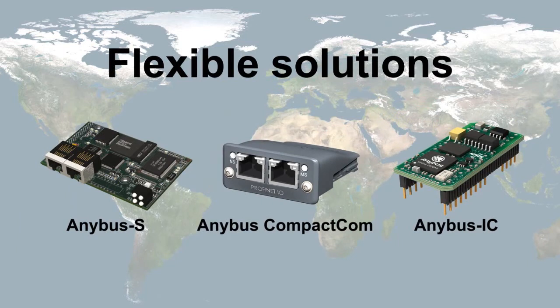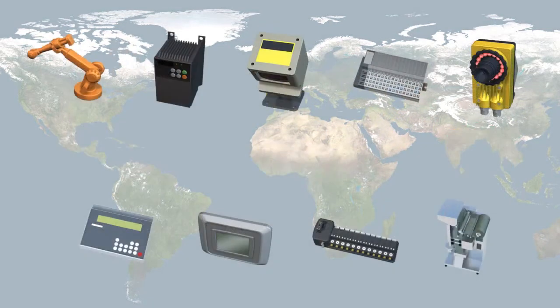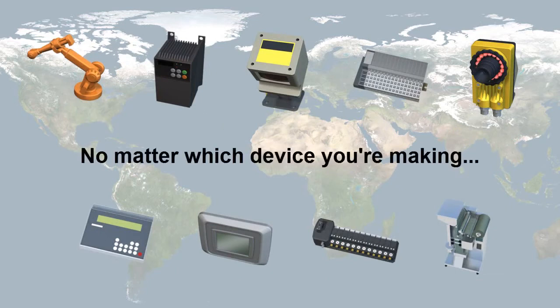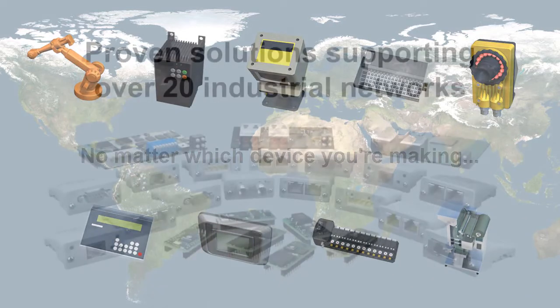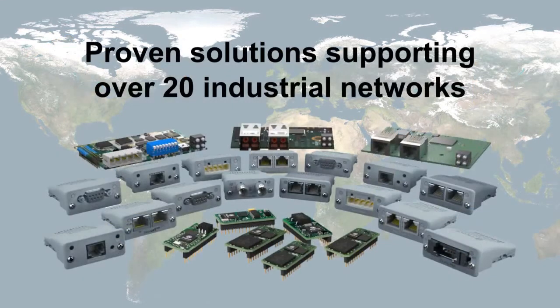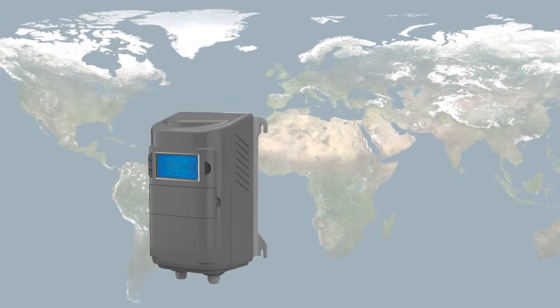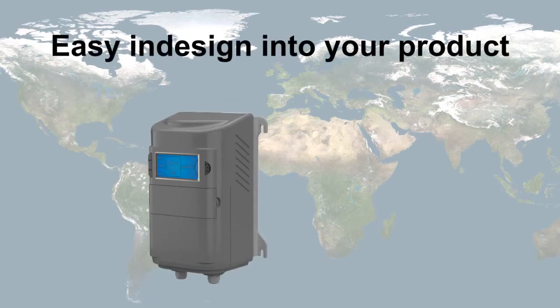You choose the Anybus module that suits you best depending on the device you are manufacturing — robots, drives, barcode scanners, etc. No matter which device you are making, Anybus will enable you to connect to over 20 different industrial networks.